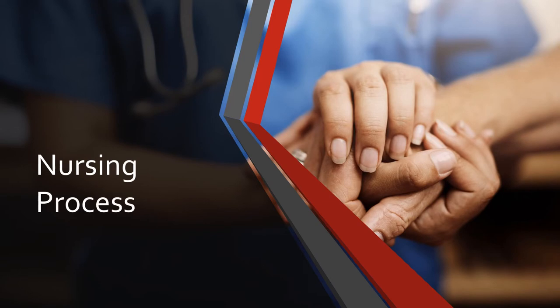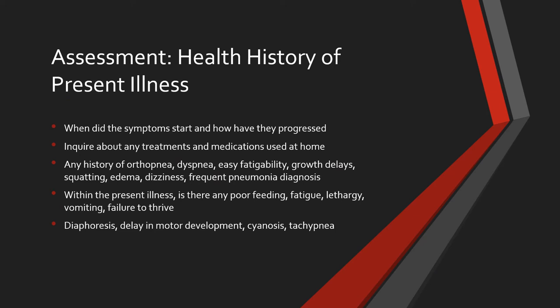When assessing a child with a cardiovascular disorder, we want to obtain a health history — remember, assessment is the first step in the nursing process. We're going to obtain a health history including present illness and past medical history, a physical examination, and prepare the child for any labs or diagnostics. As we start with the health history, we want to know when symptoms started and how they've progressed. Inquire about treatments and medications used at home, and ask parents about any history of orthopnea, dyspnea, easy fatigability, growth delays, squatting, edema, dizziness, and frequent pneumonia diagnoses.